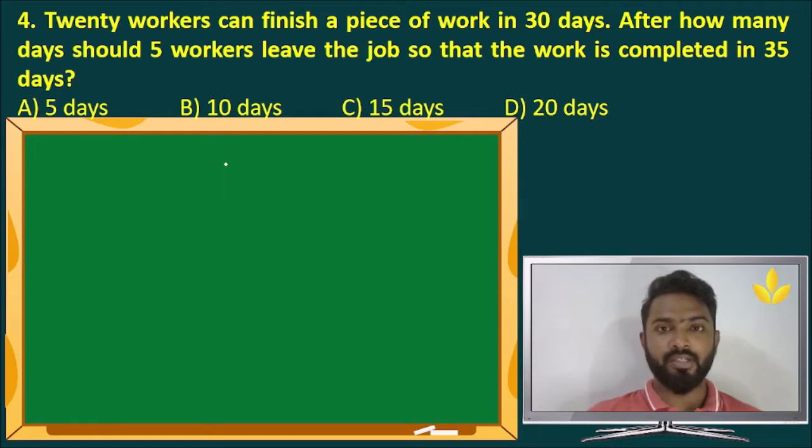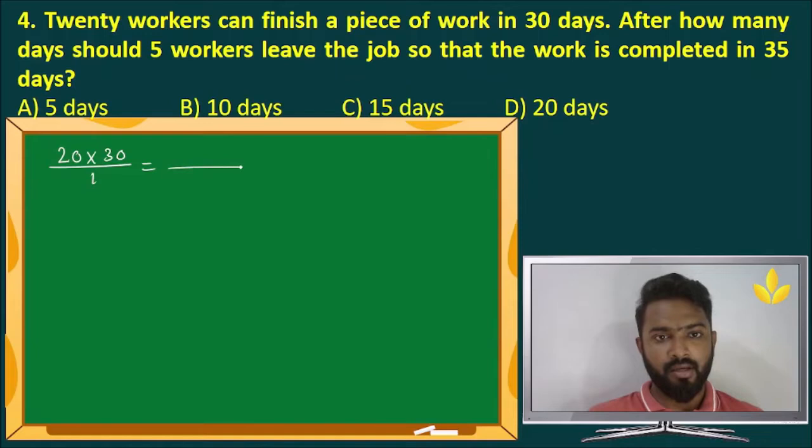Let us move on. 20 workers can finish a piece of work in 30 days. After how many days should 5 workers leave the job so that the work is completed in 35 days? This one gets a little complicated, but again the solution is in one line itself. Let us get started. M1 is 20, T1 is 30 days, W1 is 1. This is equal to, W2 is also 1 because it's the same work.